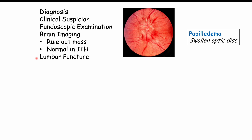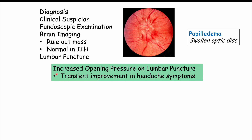After ruling out a mass, lumbar puncture can be performed to assess CSF for abnormalities in cell type or protein, and to measure opening pressure. Opening pressure will be elevated in IIH. Removing CSF during lumbar puncture can provide transient improvement in headache symptoms by reducing intracranial pressure. However, this is only temporary, as the removed CSF is replaced by new CSF produced from the choroid plexus.